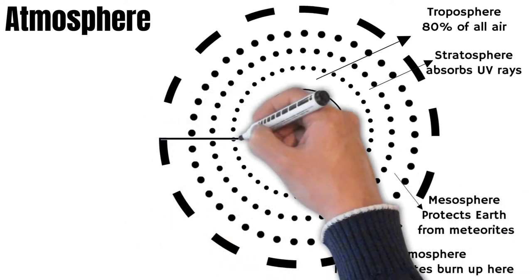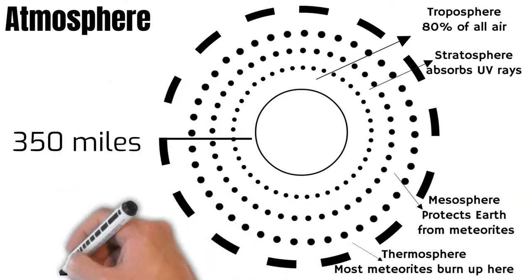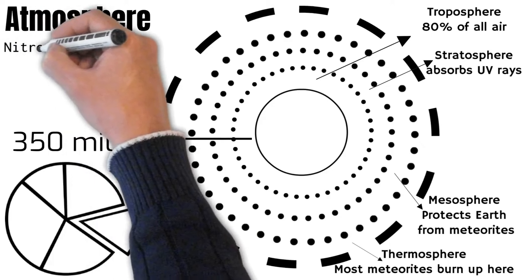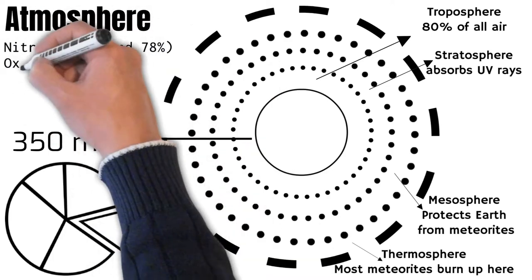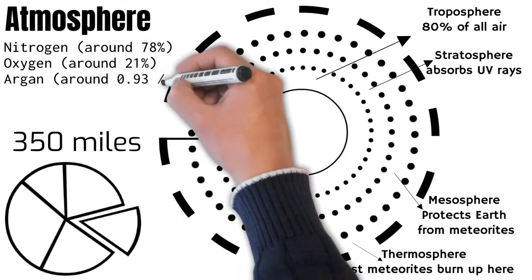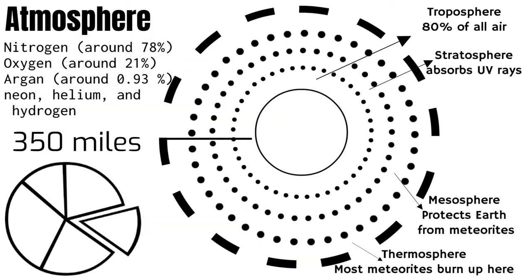The atmosphere reaches over 350 miles up from the surface of the Earth and it is primarily composed of Nitrogen, about 78% by volume, Oxygen, about 21%, Argon, about 0.93% and other components like Neon, Helium and Hydrogen in small quantities.